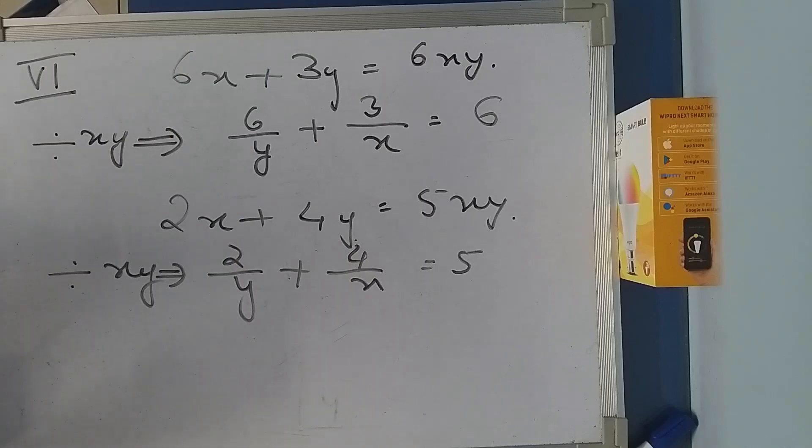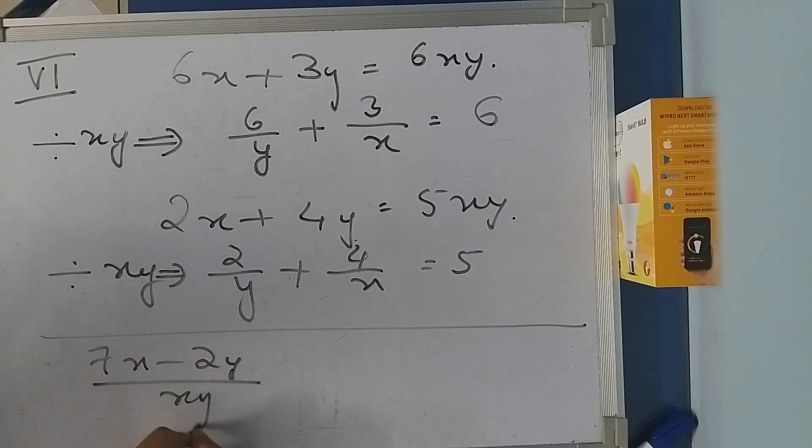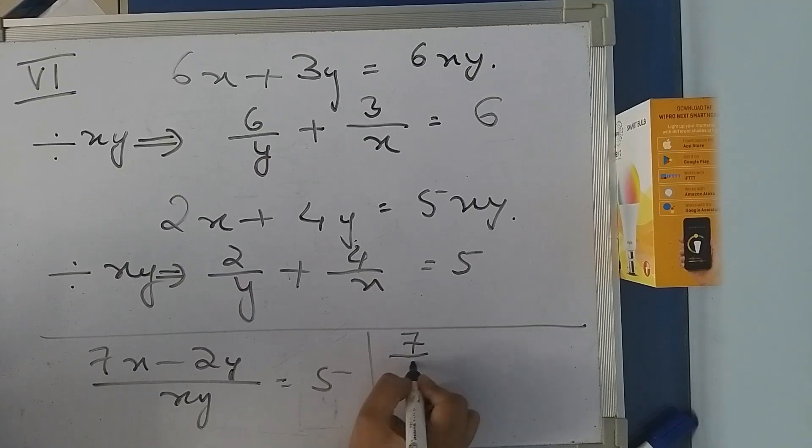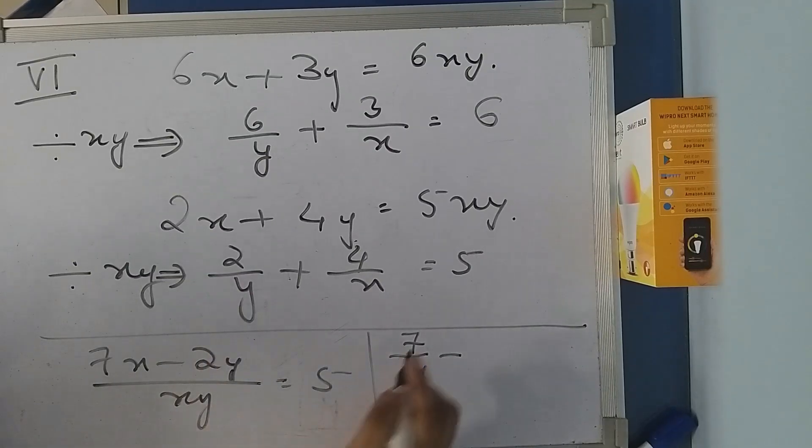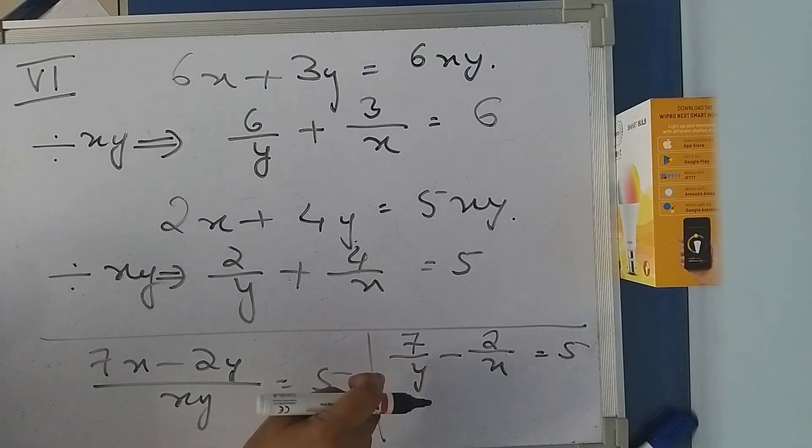In the same way, for question 5, you can cross multiply or separate the terms. The question is (7x - 2y)/xy = 5. You can split it: 7x/xy becomes 7/y, minus 2y/xy becomes 2/x, equals 5. So substitute 1/x as a and 1/y as b.